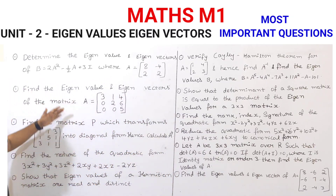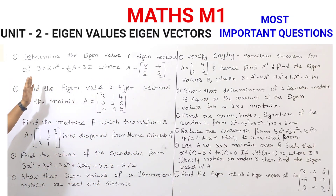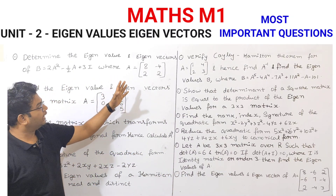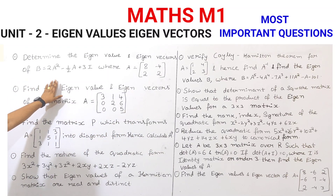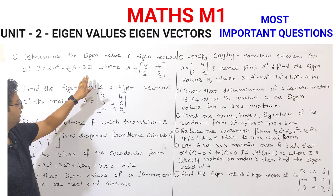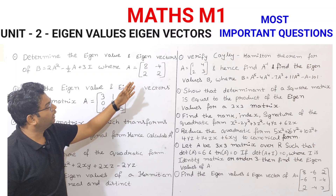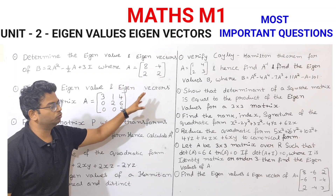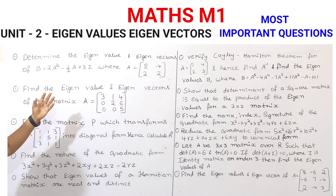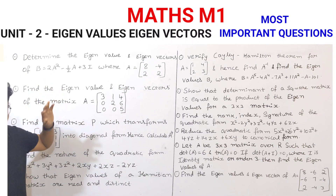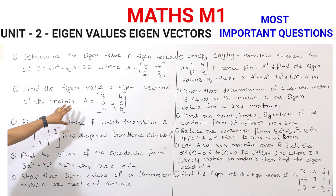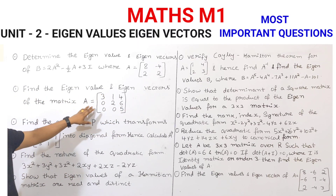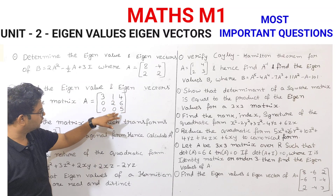Now let's look at the topics. First question: determine the Eigen Values and Eigen Vectors of V, where V is equal to 2A squared minus half A plus 3I, and A is equal to the matrix [8, -4; 2, 2]. Next, find the Eigen Values and Eigen Vectors of the matrix A equal to [3,1,4; 0,2,6; 0,0,5].